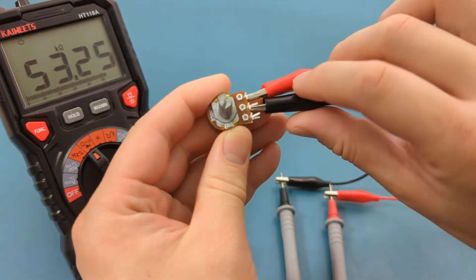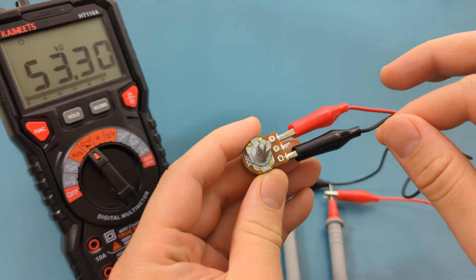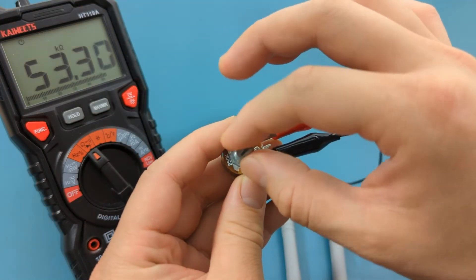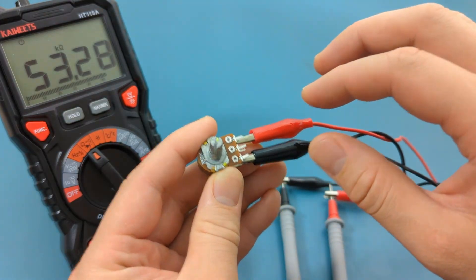Move the black alligator clip from the middle to the left terminal. Since the left and right terminals are fixed, they show the maximum resistance, which is around 53 ohms. As you can see, moving the dial doesn't change the resistance.